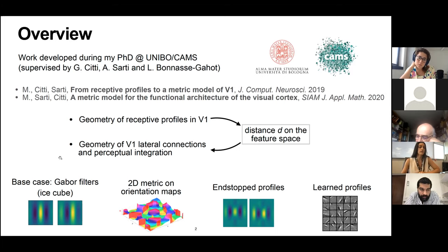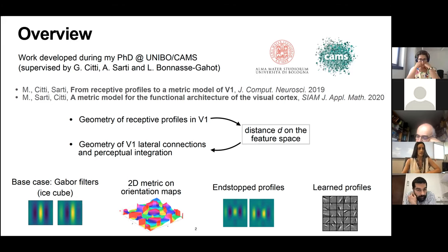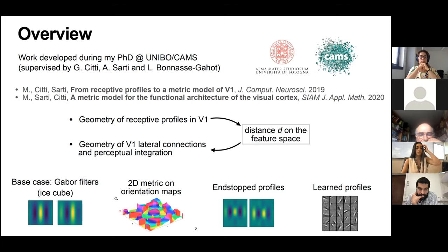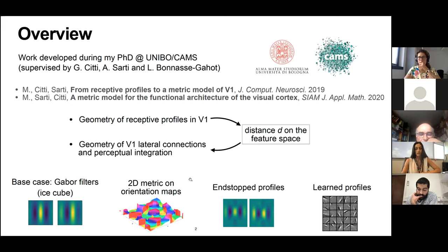I'll start by showing how this distance looks in the simplest possible description of receptive profiles — simple cells in V1, which are a family of Gabor filters with varying positions and orientations. Our framework also applies to more realistic representations, including orientation maps or different types of feature selectivity — specifically, a family of end-stopped profiles selective to curvature. Finally, I'll show that we don't need any pre-existing parameterization or ordering on the fiber to compute the connectivity associated with a bank of learned profiles.